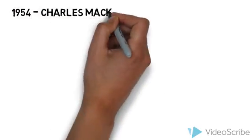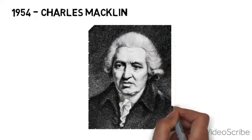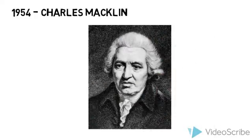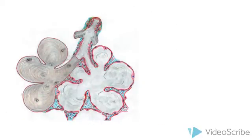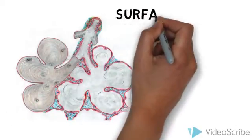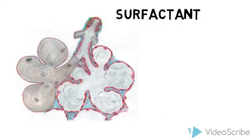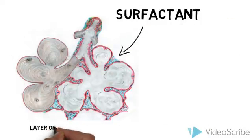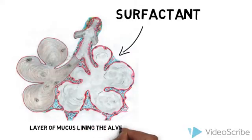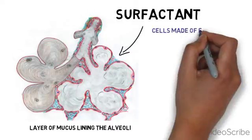In 1954, Canadian Anatomist Charles Macklin published a paper about his observations. His observations were about the layer of mucus lining the alveoli and its suggested function in relation to surface tension. He proposed that the layer of mucus was composed of cells of specific structure and were suggested to be composed of fatty acids.